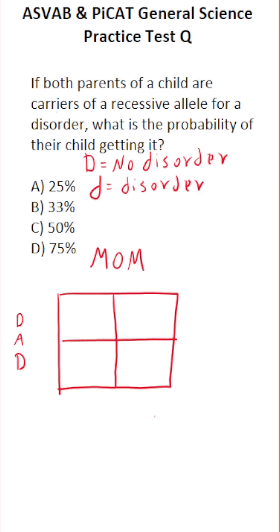I'm going to put the dad over here and the mom over here. Capital D means there's no disorder. Lowercase d means that the disorder is either recessive or present. If someone has the genotype capital D, capital D, that means there's no presence of the disorder whatsoever.